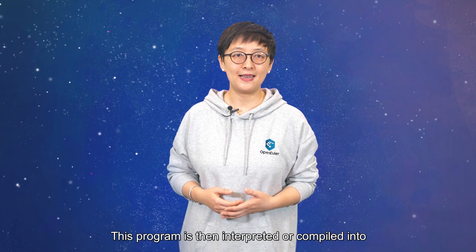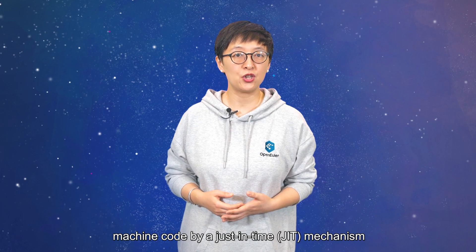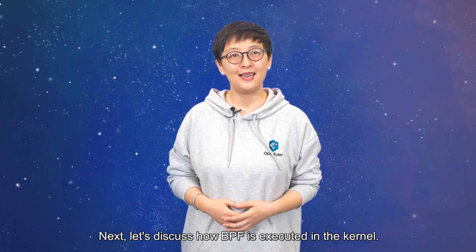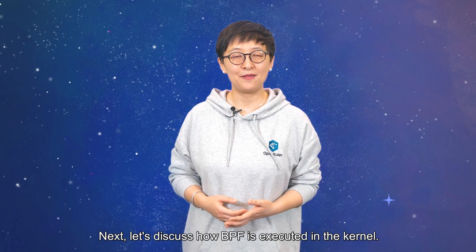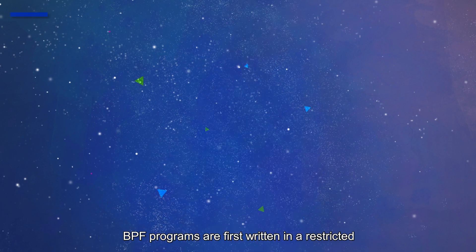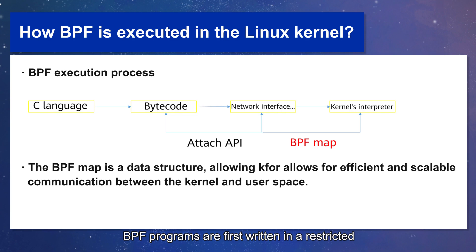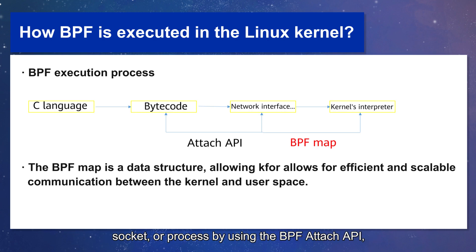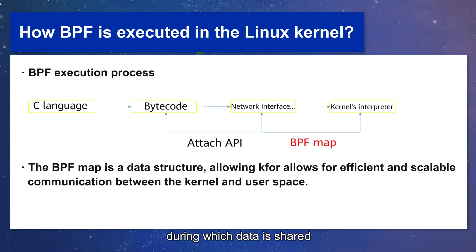This program is then interpreted or compiled into machine code by a just-in-time JIT mechanism and executed in the kernel. BPF programs are first written in a restricted subset of C language before being compiled into bytecode. Then the compiled BPF programs, which can be attached to a specific network interface, socket, or process by using the BPF Attach API, are loaded into the kernel's interpreter, during which data is shared between kernel and user space by the BPF map.